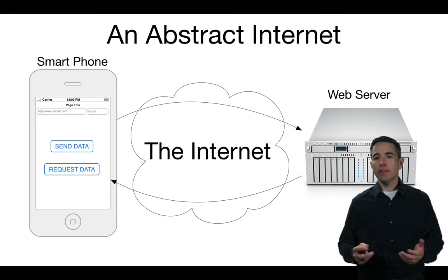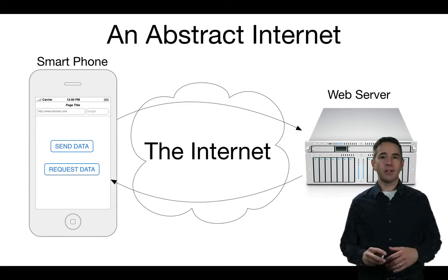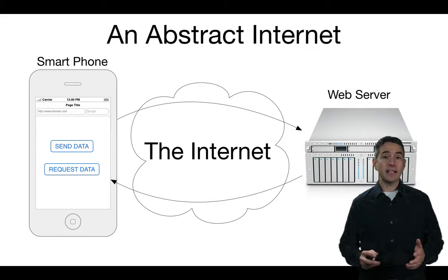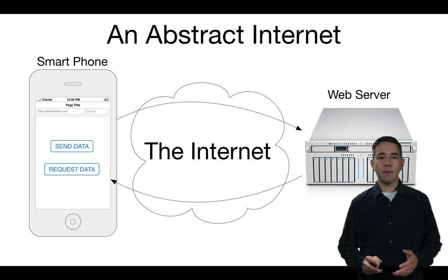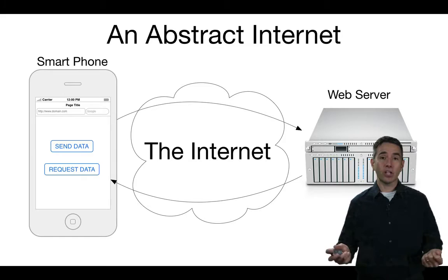In the abstract internet model, we think about an app running on a smartphone that sends and receives data — maybe messages, maybe images — and somewhere out there there's a web server run by Instagram, Facebook, WhatsApp, or whatever the organization is. When we make requests or send data to that web server, it goes vaguely through the internet. We often think of it as a big cloud without necessarily knowing what's going on inside.